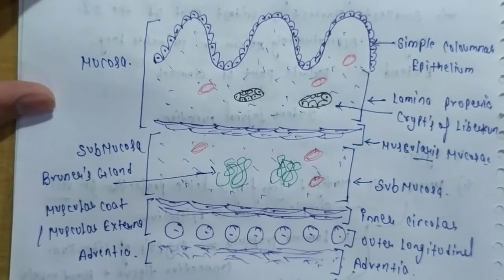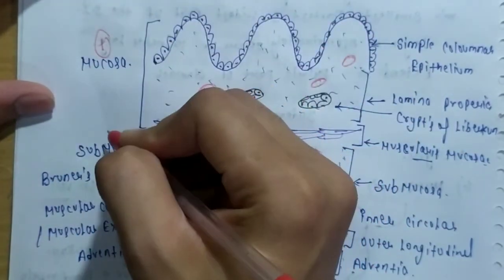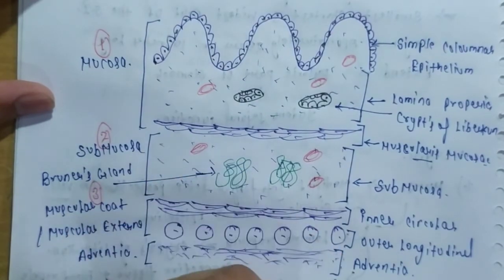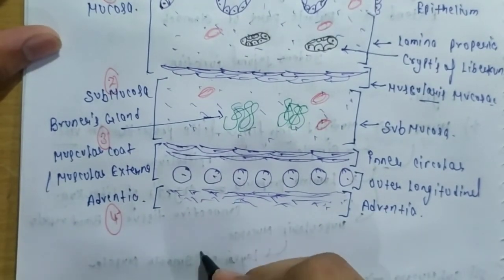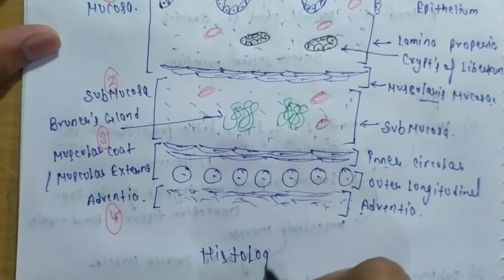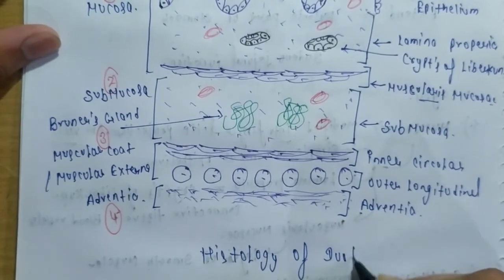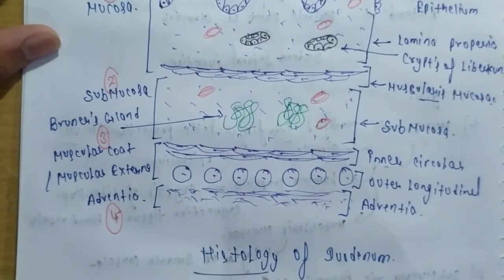So it's four layers: innermost is mucosa, then submucosa, then muscular coat (muscular external), then adventitia. So that is the histology of the duodenum — with a diagram.